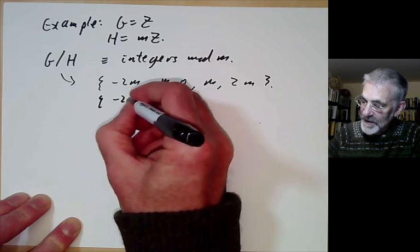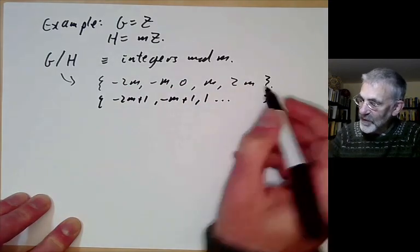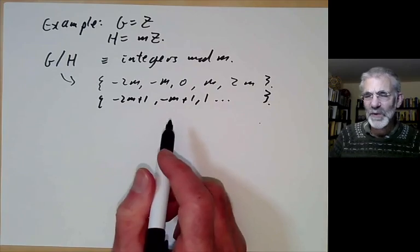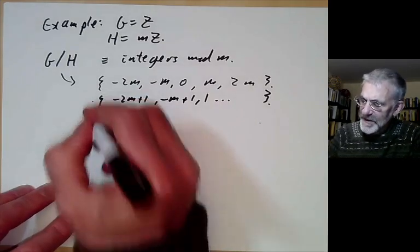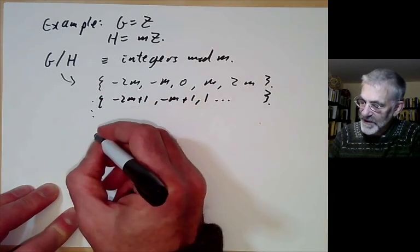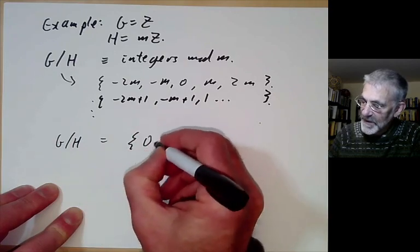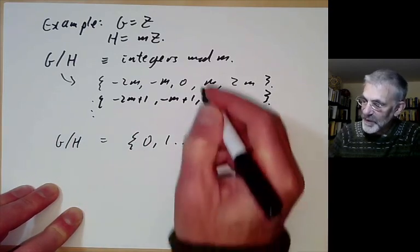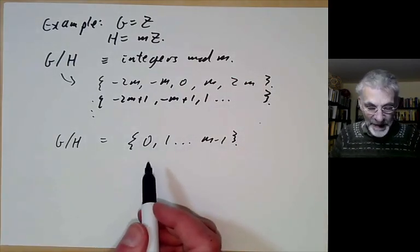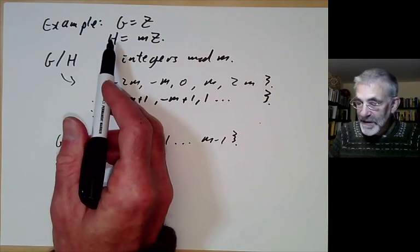The equivalence class containing 1 would be the next one, and so on. Thinking of entire equivalence classes is a headache, so instead we pick a representative element from each class and think of G/H as the set {0, 1, …, m−1}. We just pick one from each equivalence class, which is much easier to think about. We can do the same for any abelian group and any subgroup.